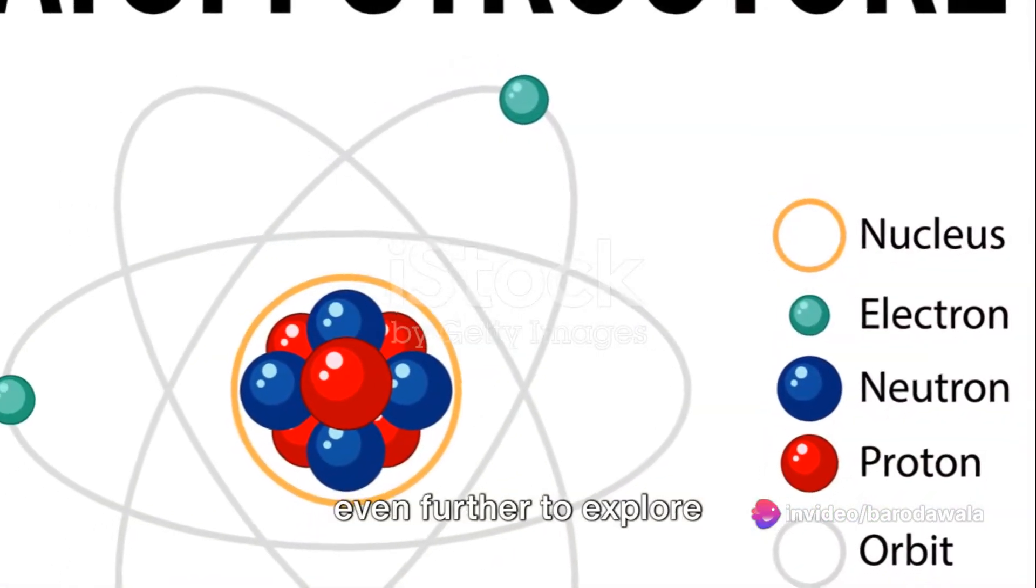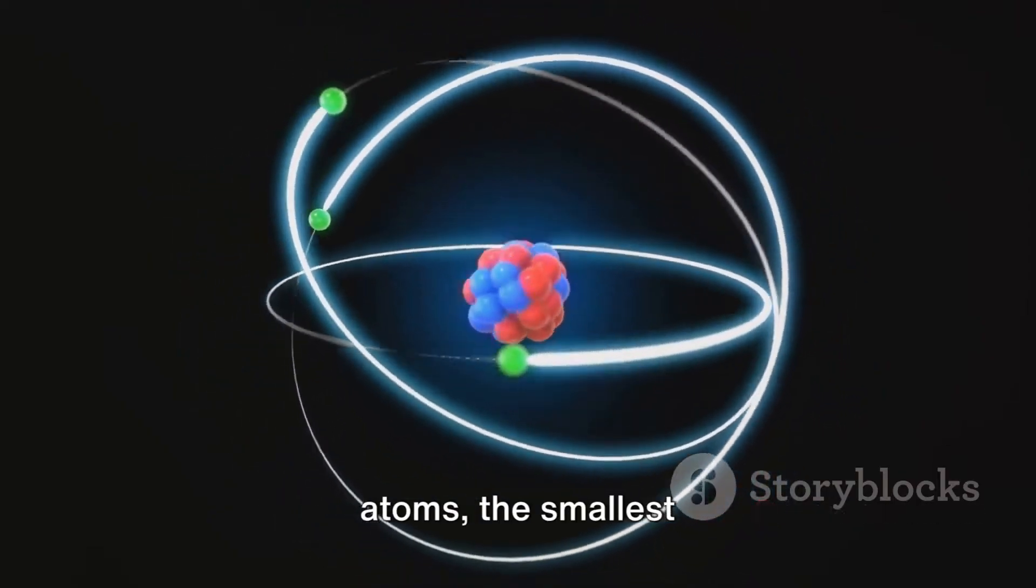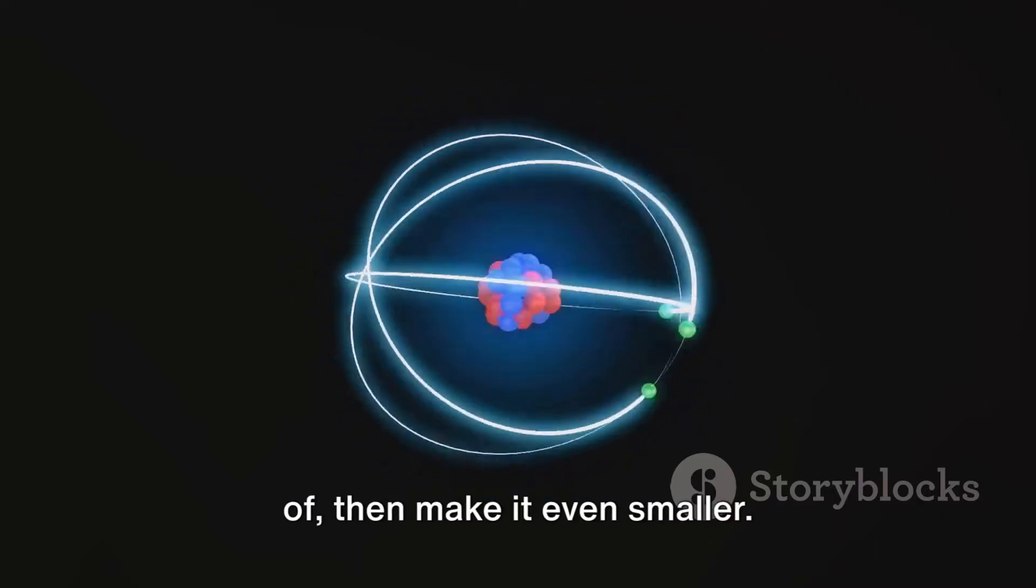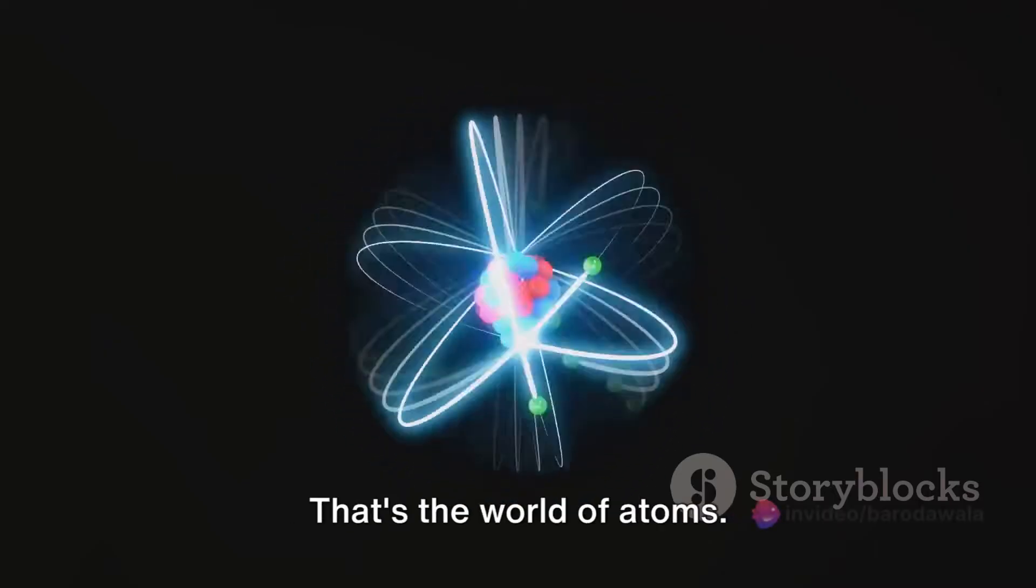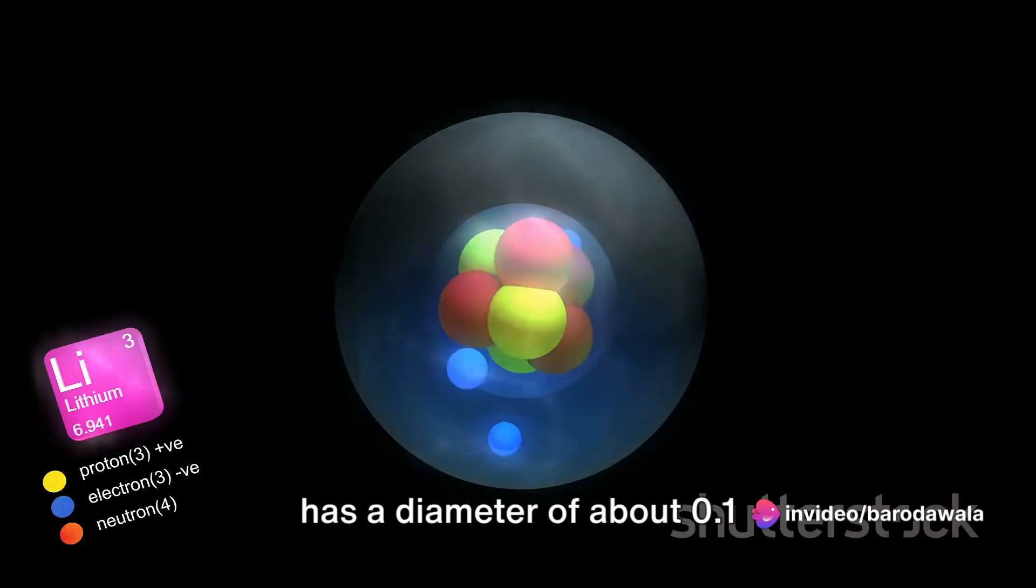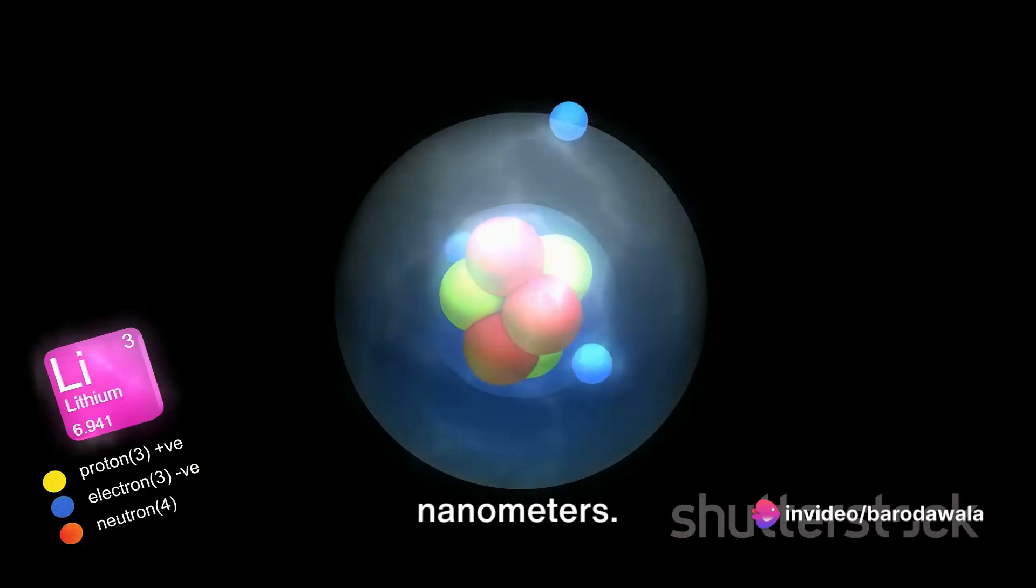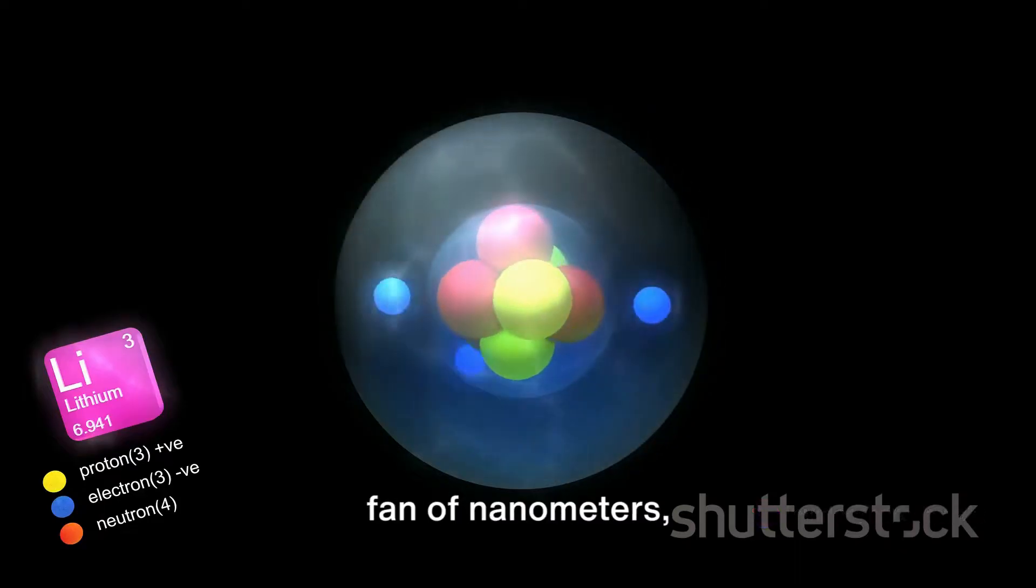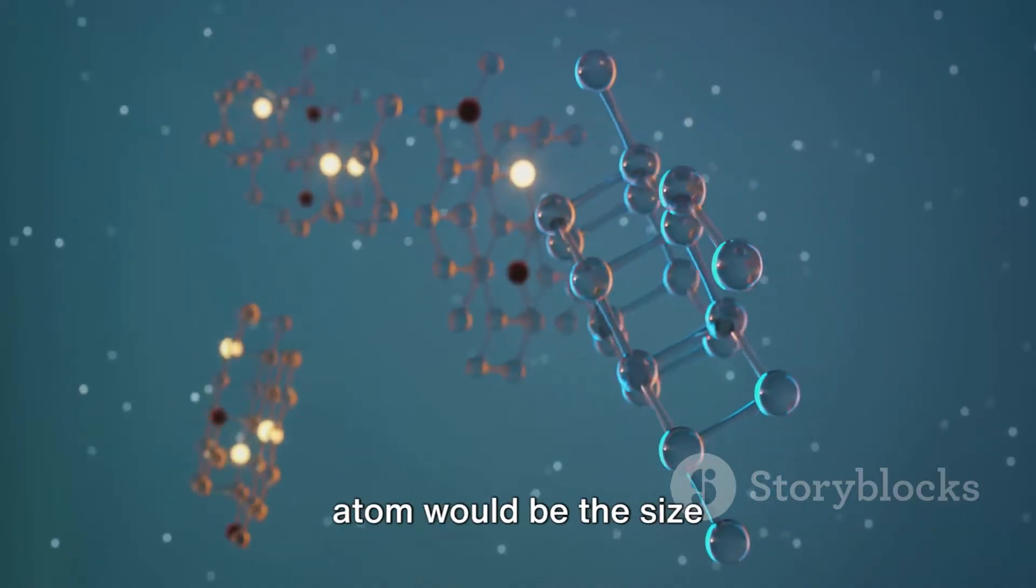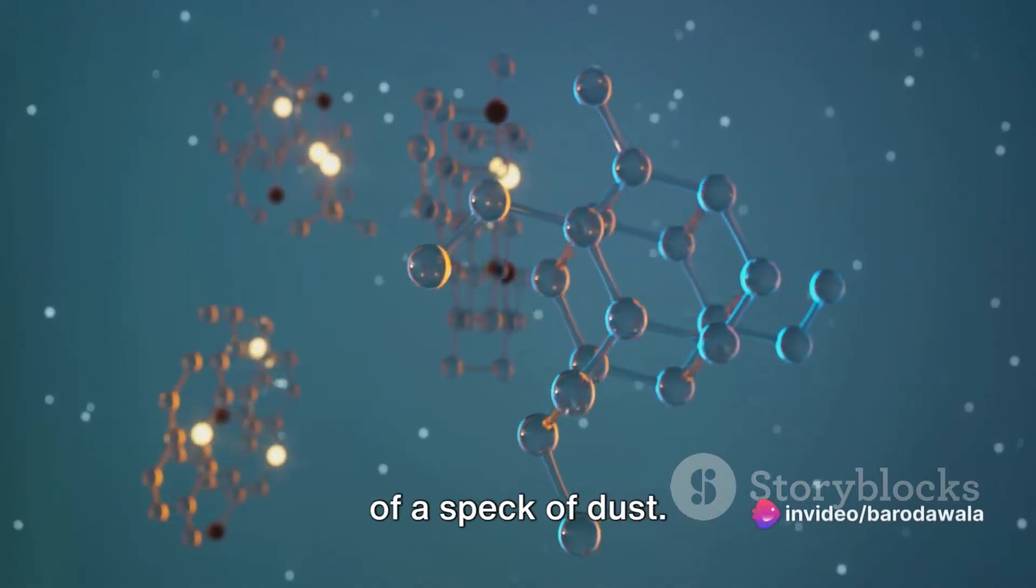Now let's shrink down even further to explore atoms, the smallest unit of matter. Imagine the tiniest particle you can think of, then make it even smaller. That's the world of atoms. They are so minuscule that the average atom has a diameter of about 0.1 nanometers. If a single grape represented a cell, an atom would be the size of a speck of dust.